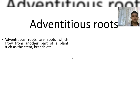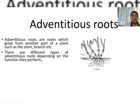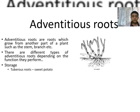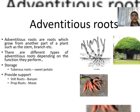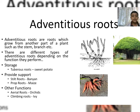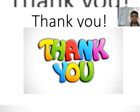Adventitious roots are roots which grow from another part of a plant such as the stem or branch. There are different types depending on their function. Stilt roots and prop roots provide support — examples: banyan, maize. Aerial roots help to breathe and climbing roots help to climb — examples: orchids and ivy. Thank you.